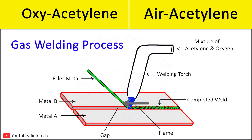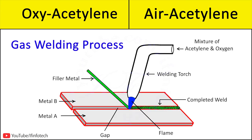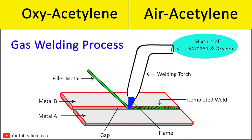The welding torch moves along the line where the join is to be created, melting the interface parts and joining them permanently. This welding process is also used for brazing, bronze welding, forging metal, and cutting. In the air acetylene gas welding process, a mixture of gases is used for welding, and the temperature of the flame is more than 2500 degrees centigrade.